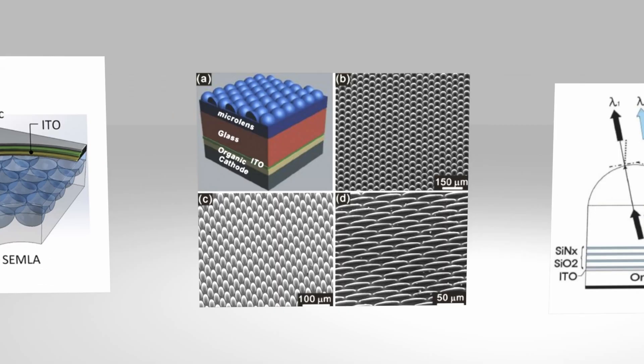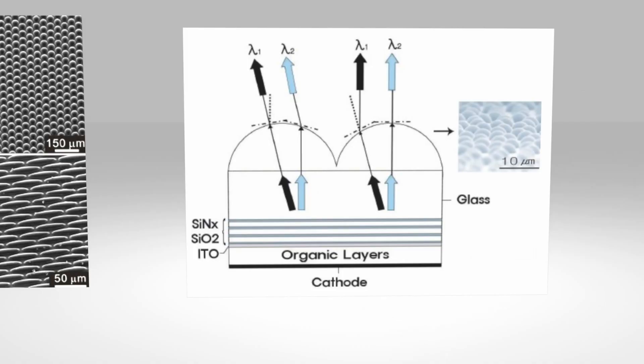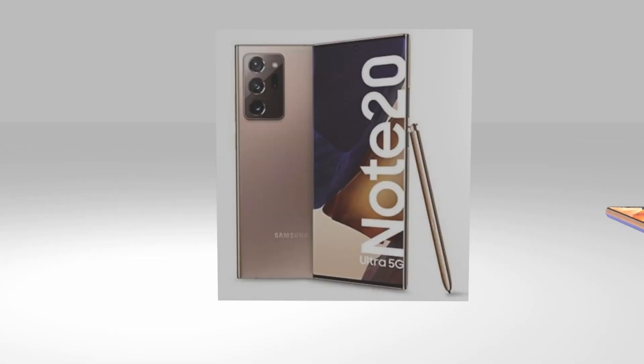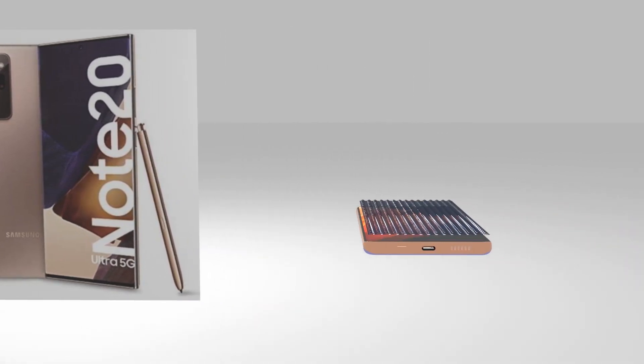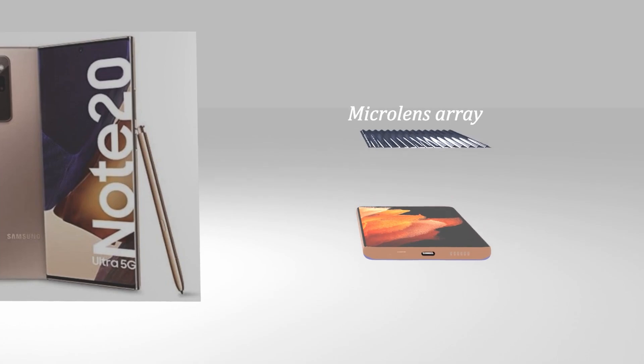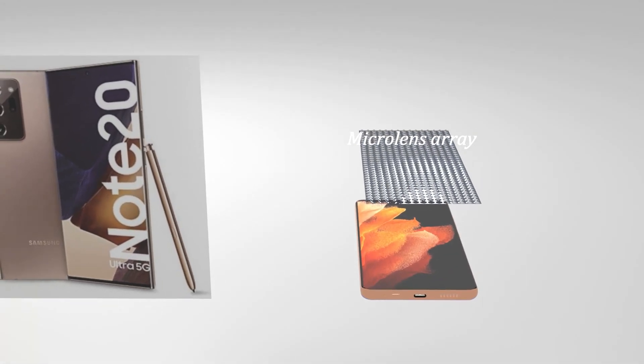In the papers and patents, numerous methods to increase the efficiency using microlenses are published. Although not well known, Samsung's Galaxy Note 20 Ultra already has this technology. Inside the display, the previously described microlenses have already been used, which serves to enhance the brightness of the display.